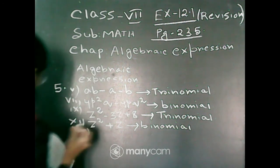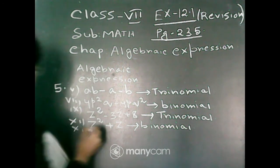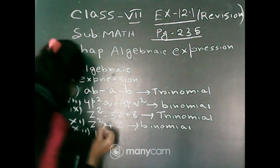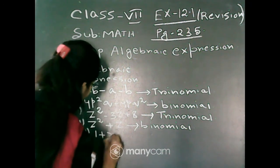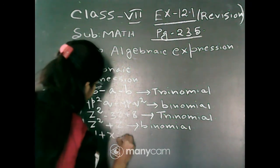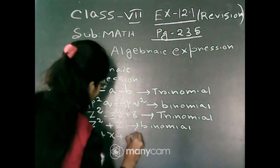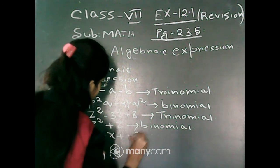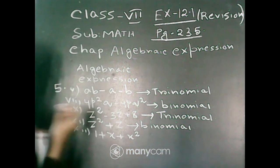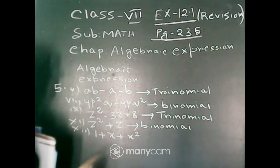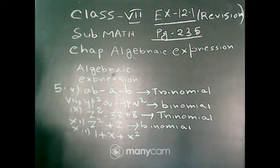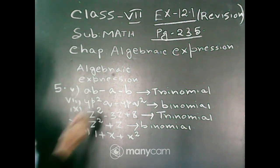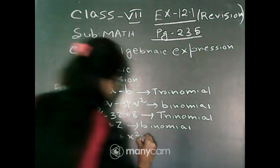Next, question number 12. Here the given algebraic expression is 1 plus x plus x square. The variable is x, and this algebraic expression contains 3 terms: 1, x, and x square. So it is a trinomial.